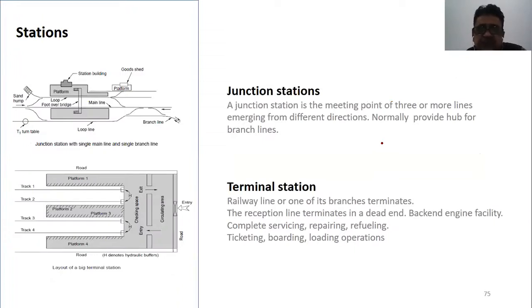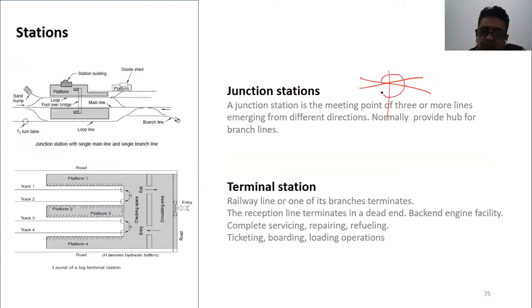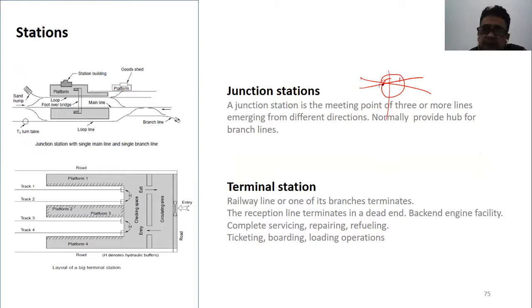There are junctions, which have multiple lines going in multiple directions to multiple destinations and multiple regions. They are common intersecting points. At a junction, one train arrives from one destination and another train moves toward a different destination — this is the interchange function of a junction.